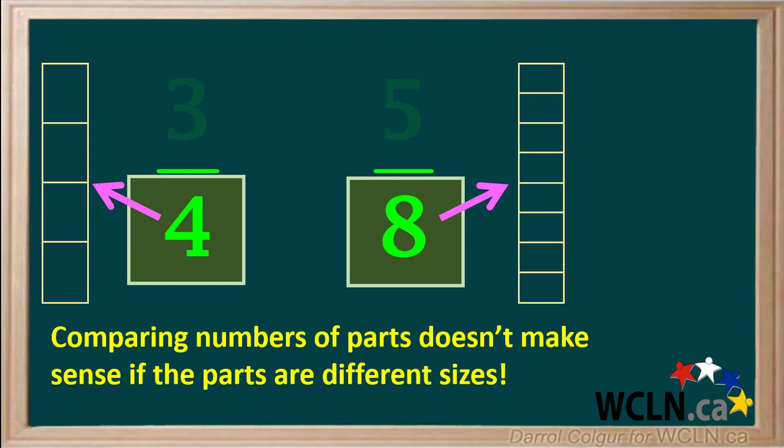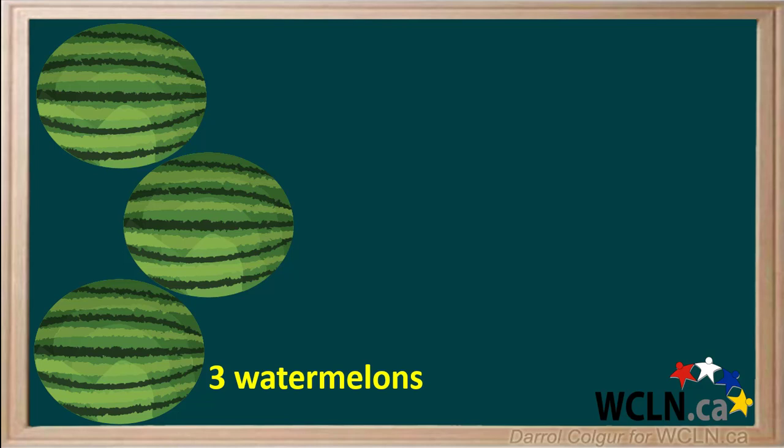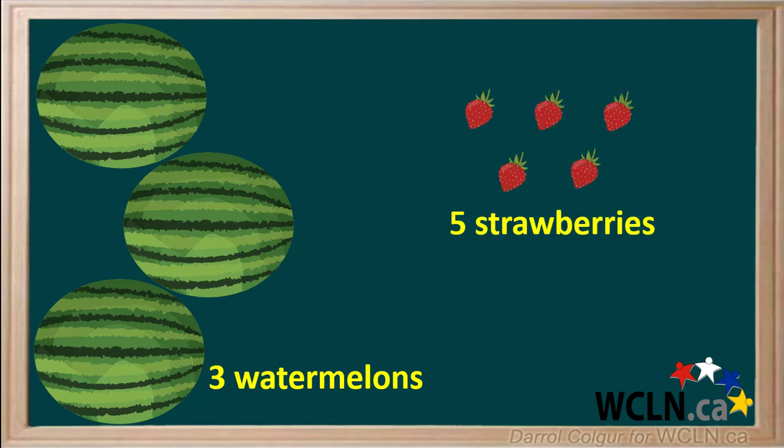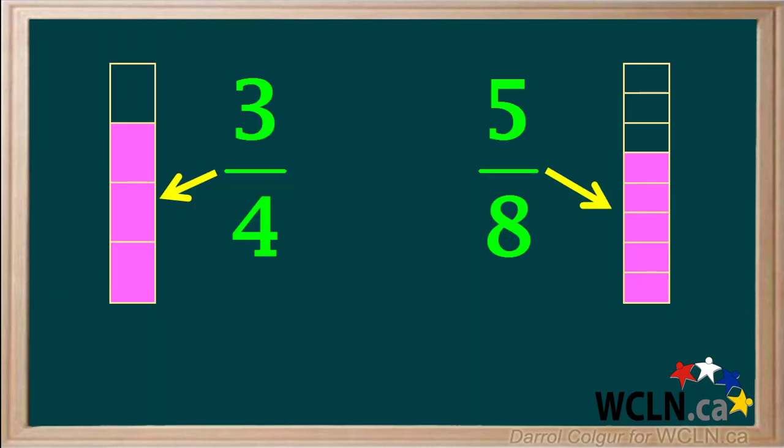Comparing numbers of parts does not really make sense when the parts are different sizes. It's much like comparing fruits. Here we have 3 watermelons and 5 strawberries. There's a greater number of strawberries than watermelons, but there's a lot more to eat in 3 watermelons than in 5 strawberries.